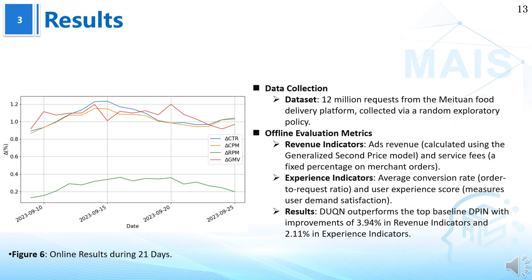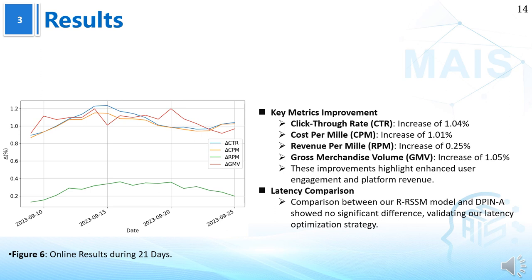We conducted offline experiments on the Meituan platform. Our results demonstrated that DUQN outperforms existing state-of-the-art methods, improving revenue indicators by 3.94% and user experience scores by 2.11%. Additionally, our model showed online enhancements in key metrics like CTR and GMV, indicating improved user engagement and platform revenue.